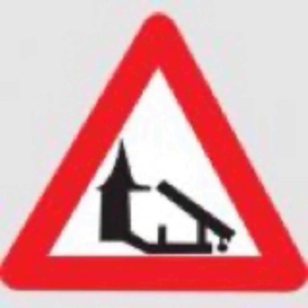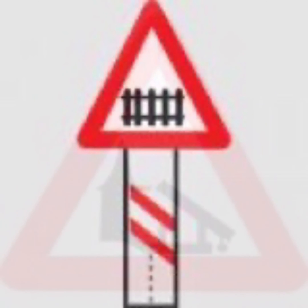Barrier ahead: this sign indicates that there is a toll collection point ahead. The driver should slow the vehicle while approaching such barriers and stop if required. Guarded railway crossing: this sign indicates that there is a railway crossing ahead which is guarded by a person.